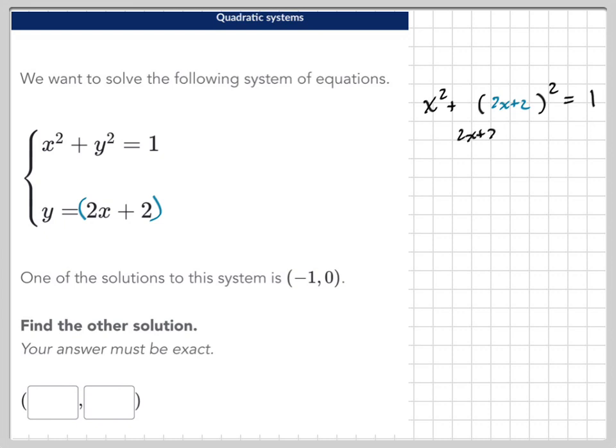Now we have to multiply that out. Make sure when you multiply this out that you multiply 2x plus 2 times 2x plus 2. And then when we do that, we get 4x squared plus 8x plus 4.